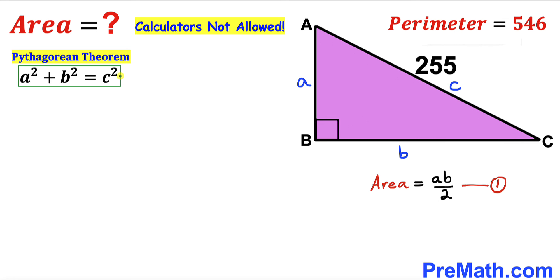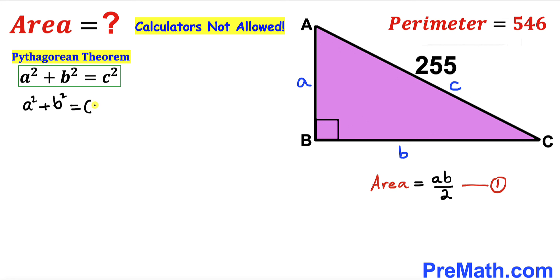Here's our next step: let's recall the Pythagorean theorem: a² + b² = c², where c is the hypotenuse. In our case, c is 255, so we substitute to get a² + b² = 255². Let's call this equation number 2.